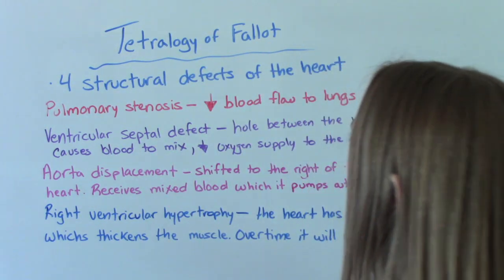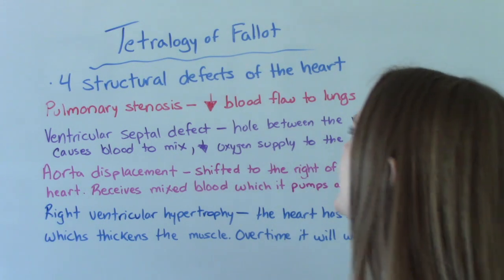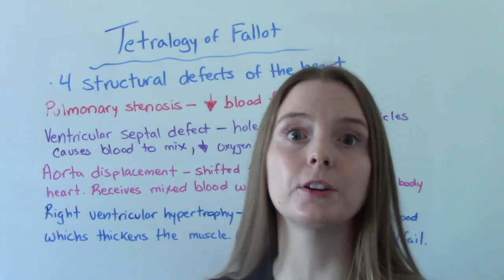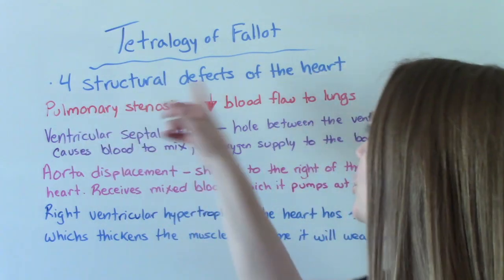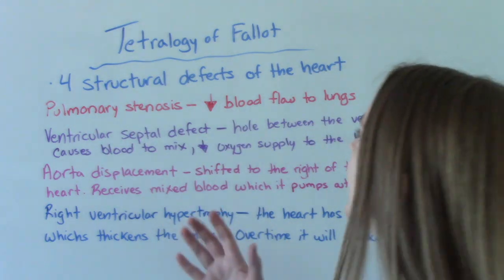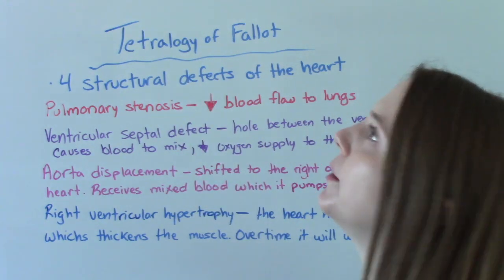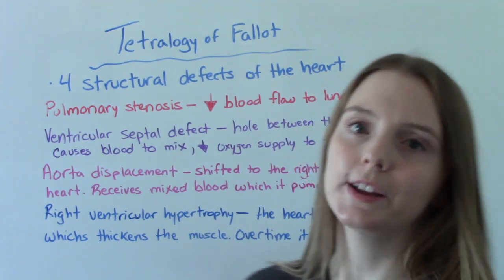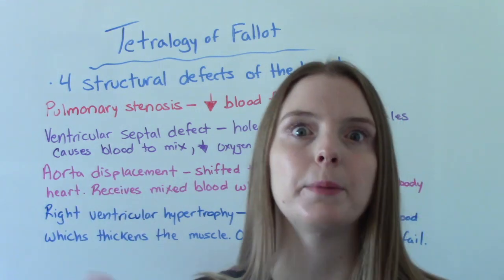So first of all, what is it? This is a congenital heart condition. So babies are born with this and it is four structural defects of the heart. If you remember, 'tetra,' the beginning of this word, means four. So this is telling you there are four issues going on and they're all creating a big problem.